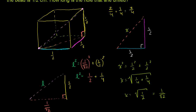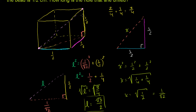So l squared equals 3 over 4, which means l equals the square root of 3 over 4. Taking the square root of both sides, we get l equals the square root of 3 over the square root of 4. The square root of 4 is 2, so we're done. The length of the hole drilled in this bead from one corner all the way to the opposite corner is the square root of 3 over 2 centimeters.